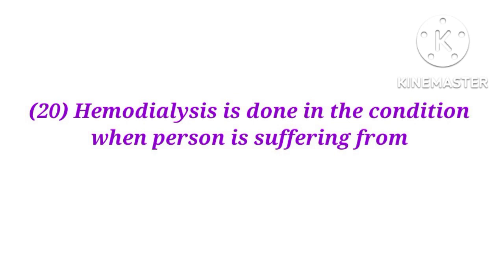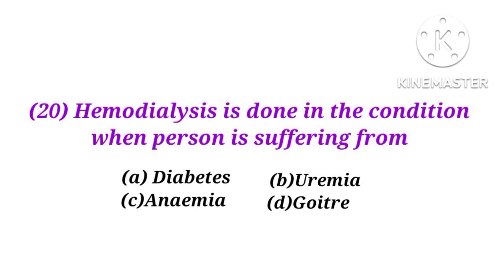Number 20. Hemodialysis is done when a person is suffering from diabetes, uremia, anemia, or goiter? The answer is B. Hemodialysis is a procedure to clean the blood and is the most common treatment for uremia.